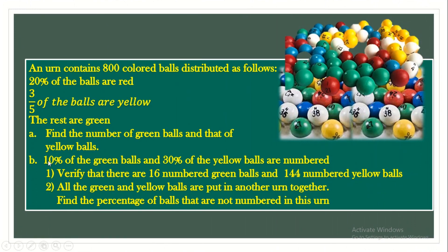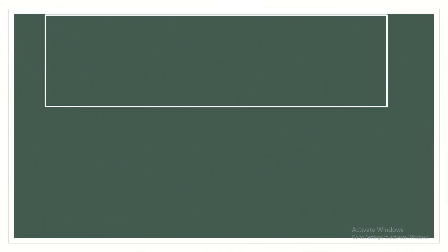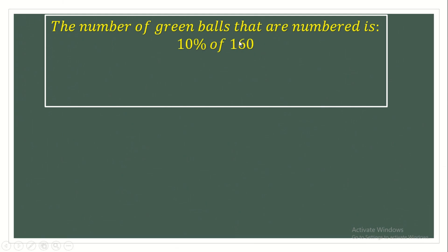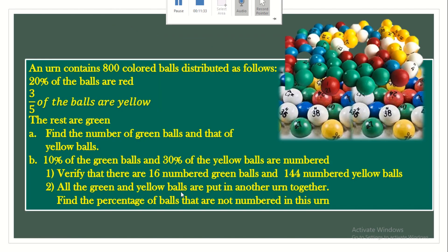The second part is also very important. 10% of the green balls and 30% of the yellow balls are numbered. Verify that there are 16 numbered green balls and 144 numbered yellow balls. The number of numbered green balls is 10% of 160, which is 10 over 100 times 160, giving us 16 balls. This verifies the claim of 16 numbered green balls.